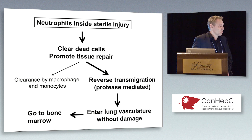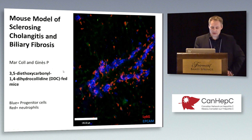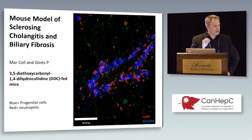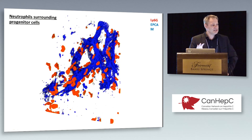So our idea that neutrophils go there to injure actually isn't true at all — they play a very important role and then they leave. The last point: we've started collaborating with Professor Guinness in Spain, using a DDC-fed model where you have chronic injury — the ductules get plugged and you get progenitor blue cells growing. The red neutrophils surround these cells and for some reason they attack these cells and don't leave. We're trying to understand what cues now keep them there to cause this chronic injury.